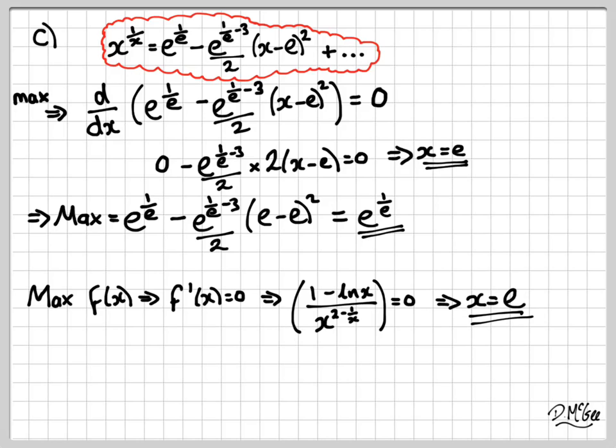If we now put x equal to e back into the original function, then we get e to the 1 over e, and so indeed, the maximums are the same as desired.